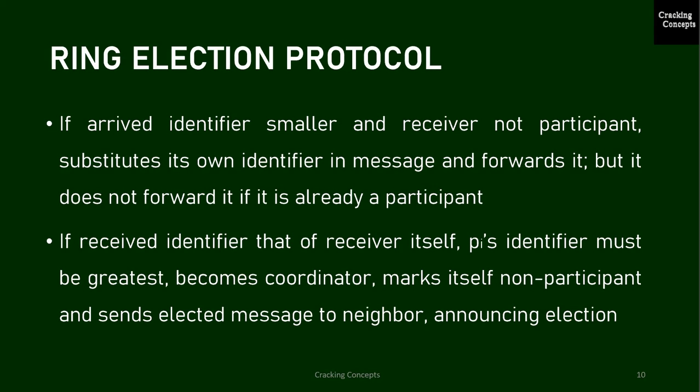If the received identifier is that of the receiver itself, then this process must have the greatest identifier and it becomes the coordinator. The coordinator marks itself as a non-participant once more and sends an 'elected' message to its neighbor, announcing its election and enclosing its identity. When a process PI receives an elected message, it marks itself as a non-participant, sets its 'elected' variable to the identifier in the message, and unless it is the new coordinator, forwards the message to its neighbor.